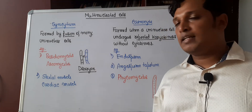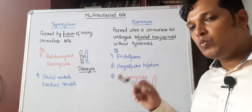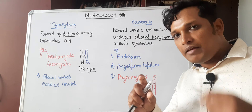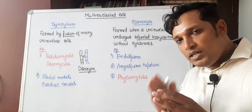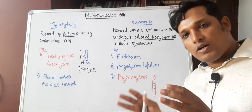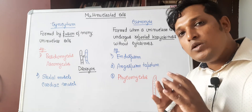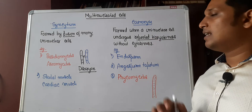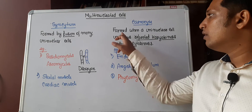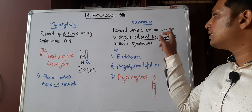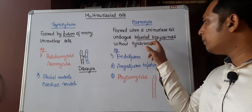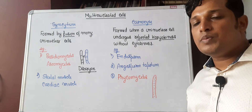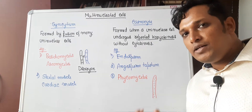What is meant by a synocyte? When a cell having a single nucleus undergoes repeated nuclear division called karyokinesis, without any cytoplasmic division called cytokinesis, the resultant multi-nucleated cell is called a synocyte. This synocytic condition is formed when a uni-nuclear cell undergoes repeated karyokinesis without cytokinesis.